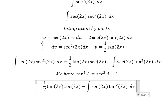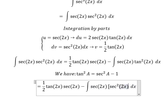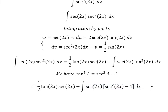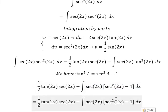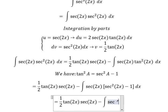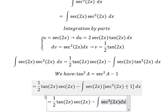So this becomes secant(2x) multiplied by (sec²(2x) − 1), giving us negative secant(2x)·sec²(2x), which is negative sec³(2x) dx.